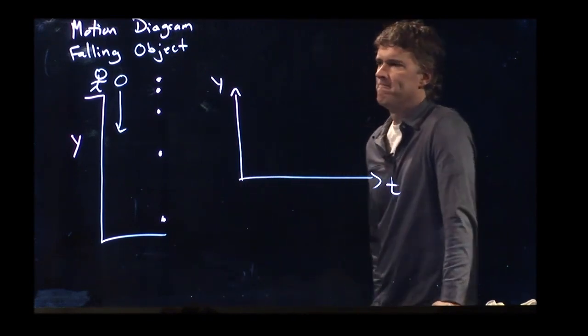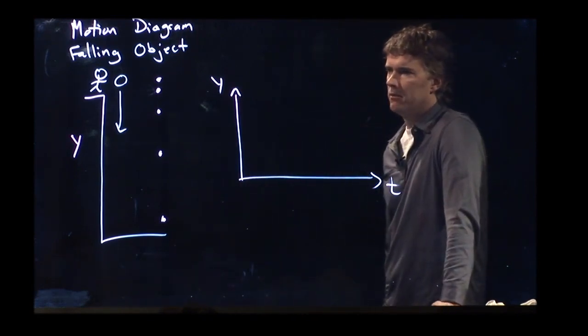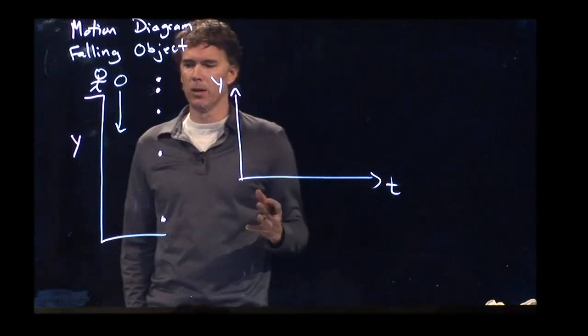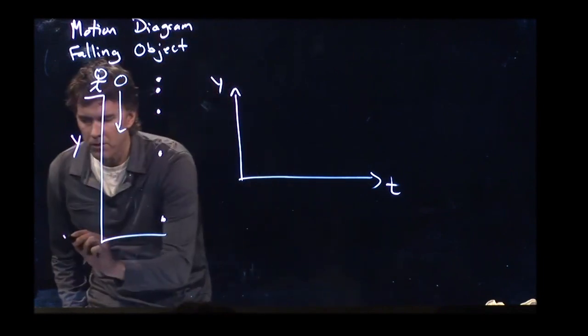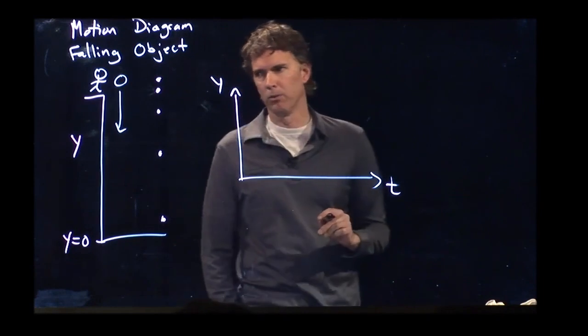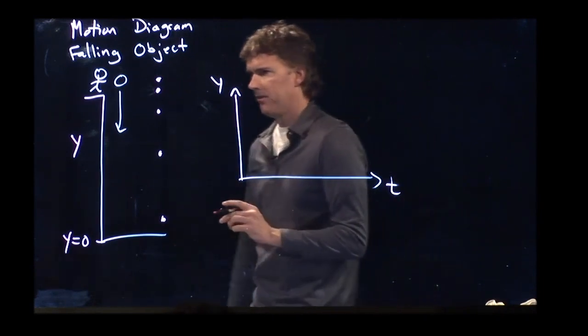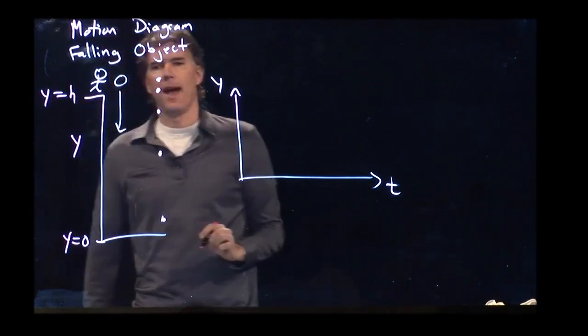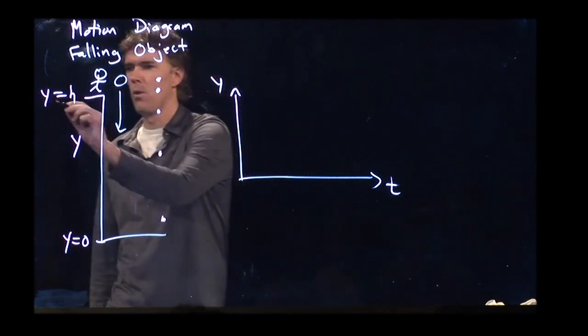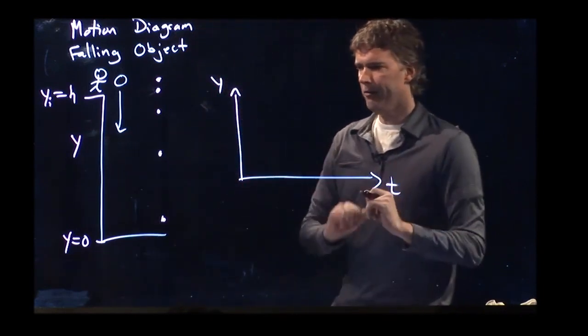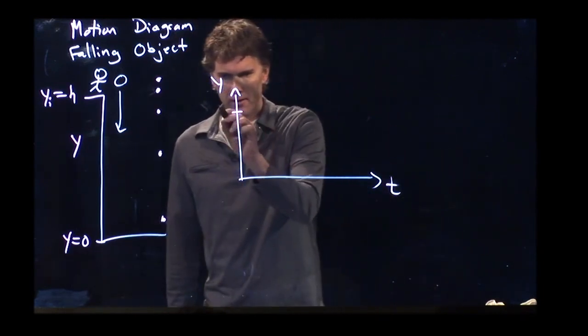All right. What do we need to know? Well, we probably need to know where is y equal to zero. So why don't we say that the ground is y equals zero. And let's say that we start up at h. Y initial is equal to h. So on my graph here, I would start at h.